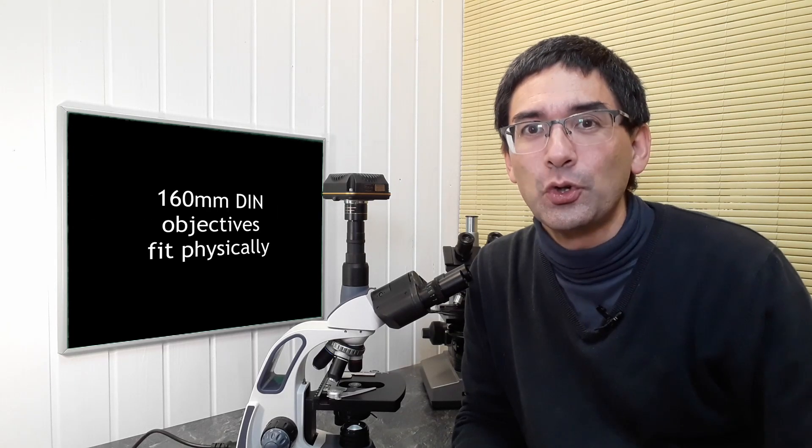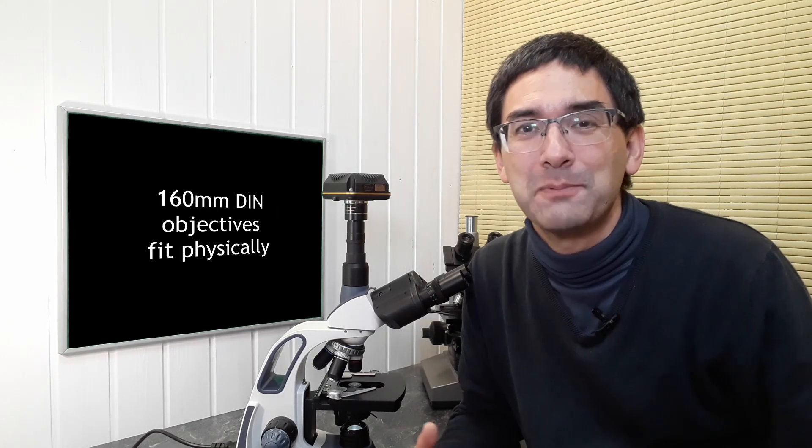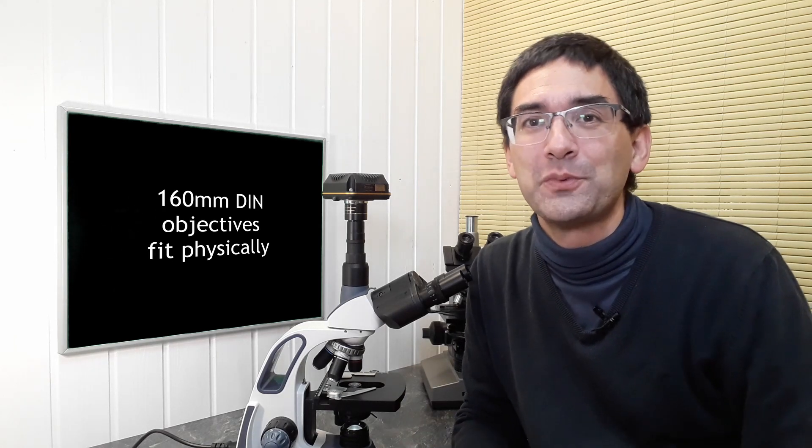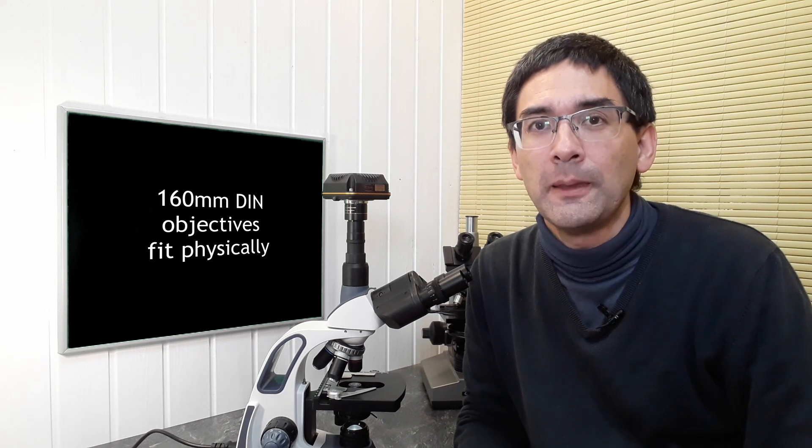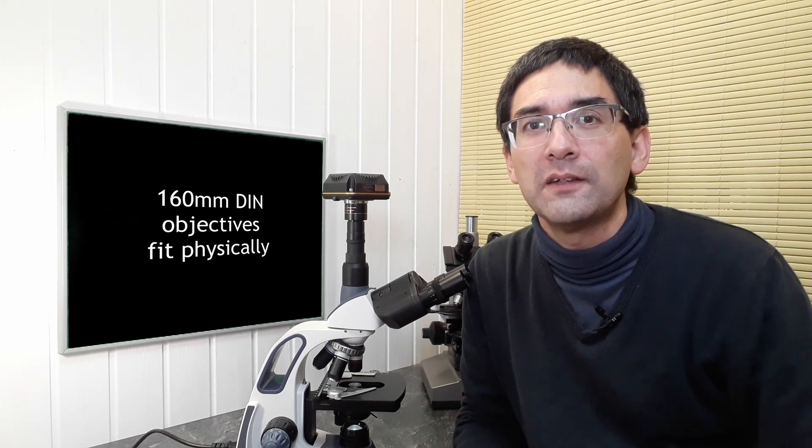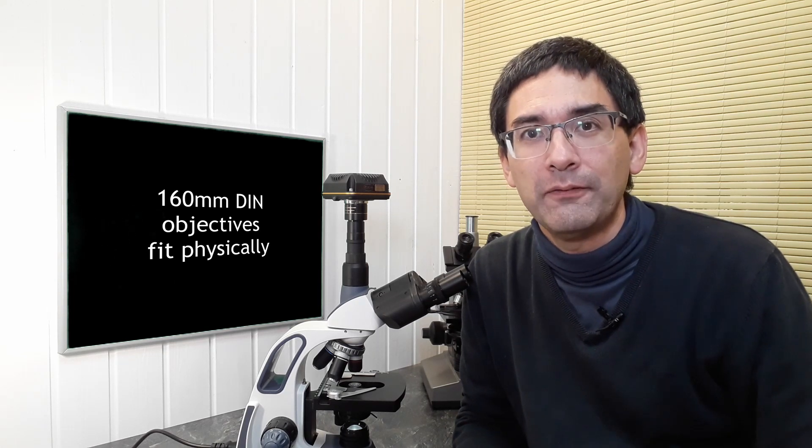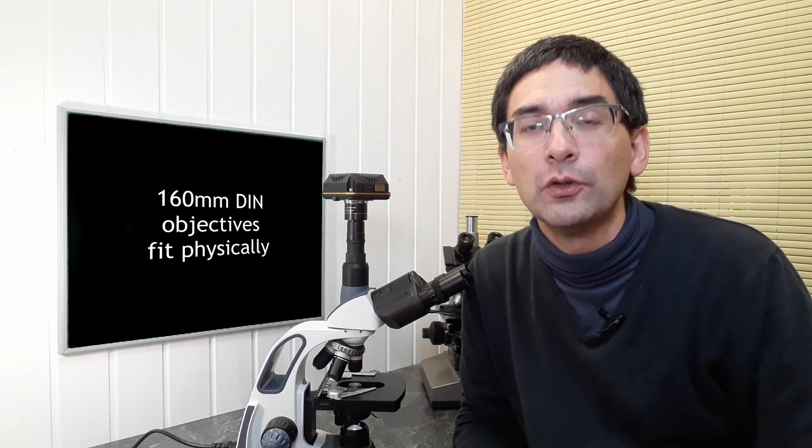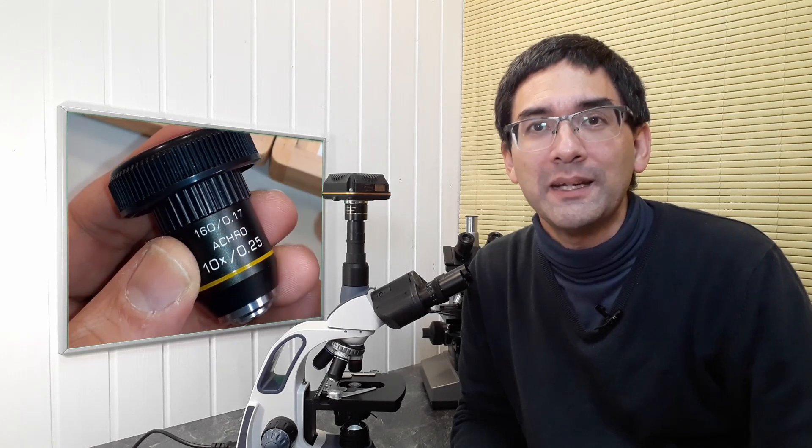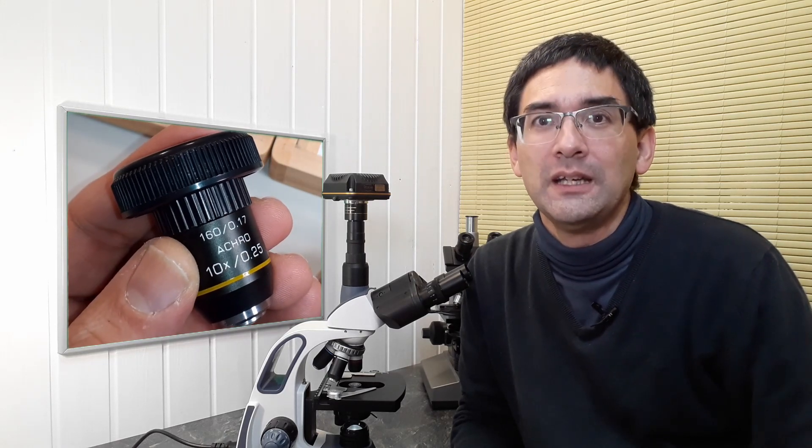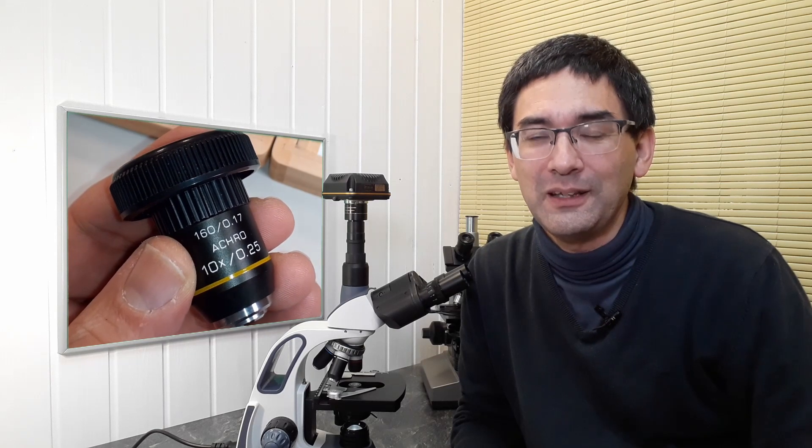Most microscopes on the lower level end of the financial spectrum, so most cheaper microscopes, actually have the so-called 160 millimeter standard, and those objectives you can identify because they have the number 160 written on them, but this still does not mean that all of these objectives are automatically interchangeable with each other. That's really an important thing to consider here.